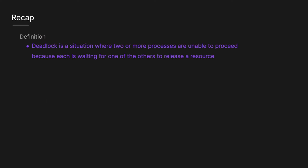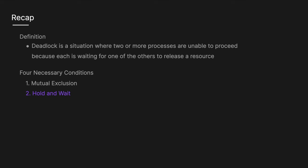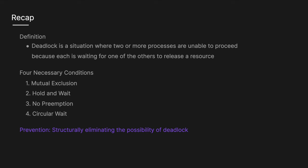To recap: deadlock is a situation in an operating system where two or more processes are unable to proceed because each is waiting for one of the others to release a resource. The four necessary conditions are: mutual exclusion (only one process can use a resource at any one time); hold and wait (a process holds at least one resource while waiting to acquire more); no preemption (a resource cannot be forcibly taken — a process must release voluntarily); and circular wait (a circle of processes each waiting for a resource held by the next). Prevention focuses on structurally eliminating deadlock by negating at least one condition, while avoidance dynamically examines resource allocation to ensure the system can always reach a safe state.